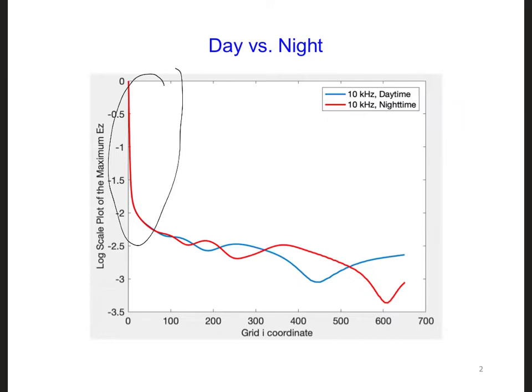But beyond that range, the conditions of the ionosphere dominate the propagation characteristics along the ground, since this is an E field sampled along the ground. We see very different mode interactions in the earth-ionosphere waveguide for day versus night conditions.